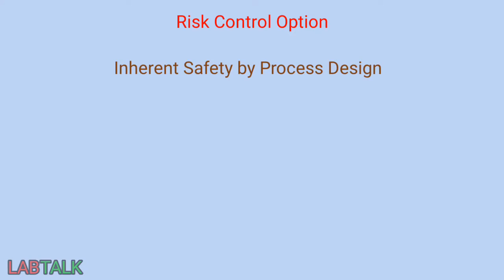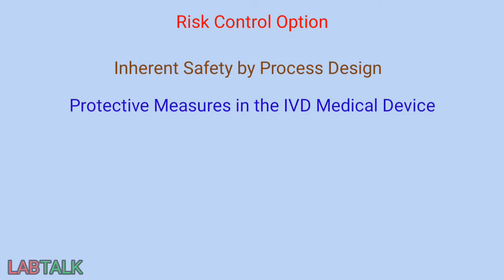The next option for selecting risk control measures is protective measures in IVD medical devices. If the risk is related to the IVD medical device, we have to find out whether there are any risk control measures in the IVD medical device or equipment itself. Many times, alarms, failure detection methods, and fail-safe mechanisms are in place in most medical devices or laboratory equipment, and this can be used as a risk control measure.